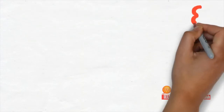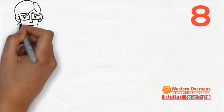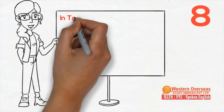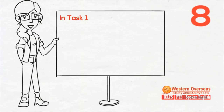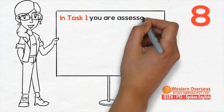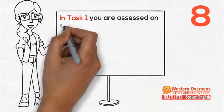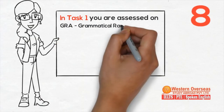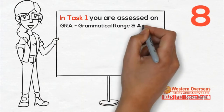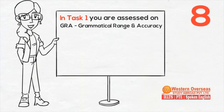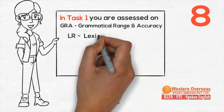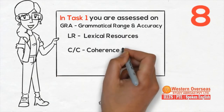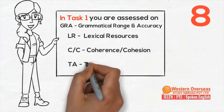Tip number eight: in Task 1, you are assessed on four parameters — GRA: grammatical range and accuracy; LR: lexical resources and vocabulary; CC: coherence and cohesion; and very importantly, TA: task achievement.